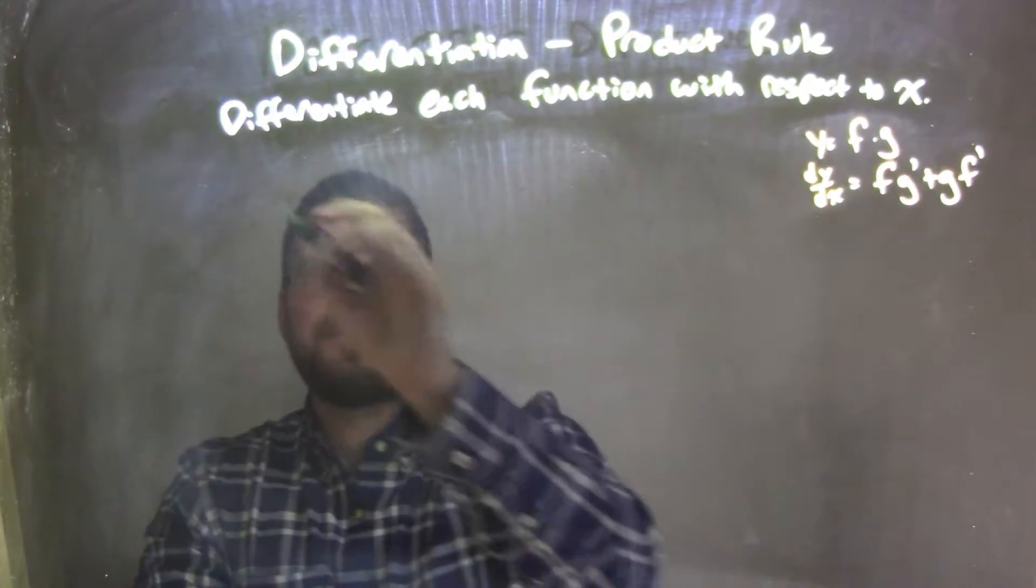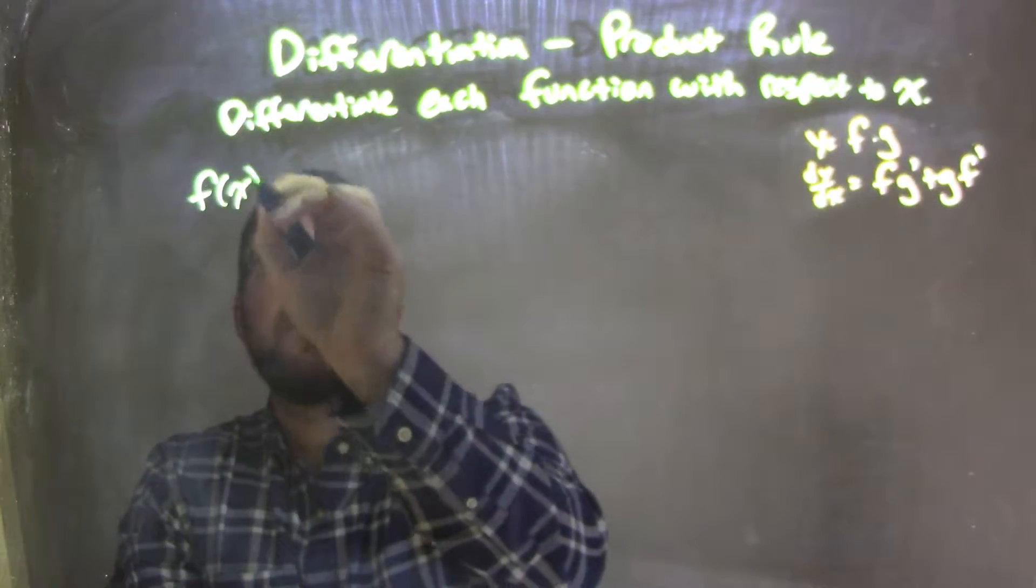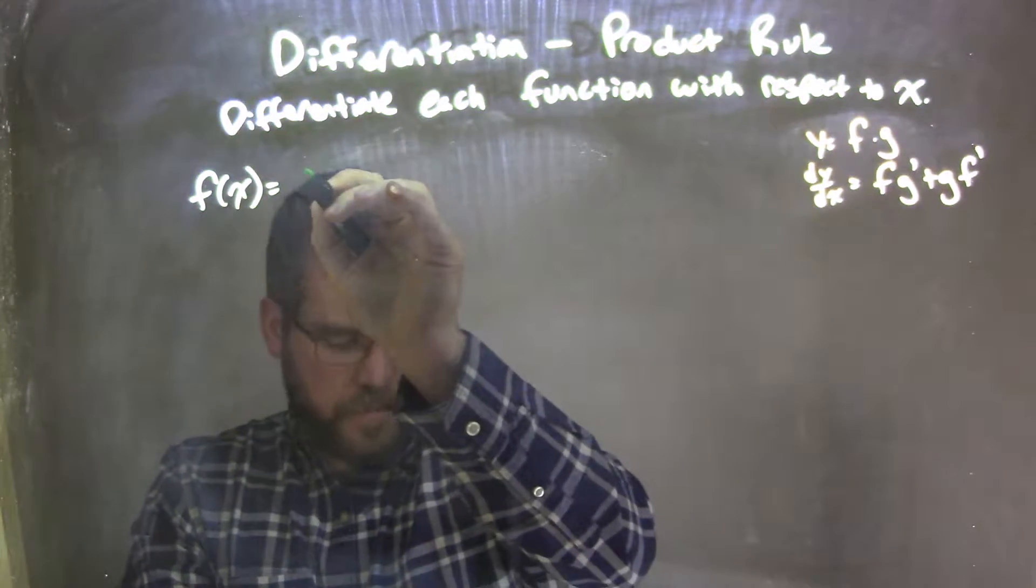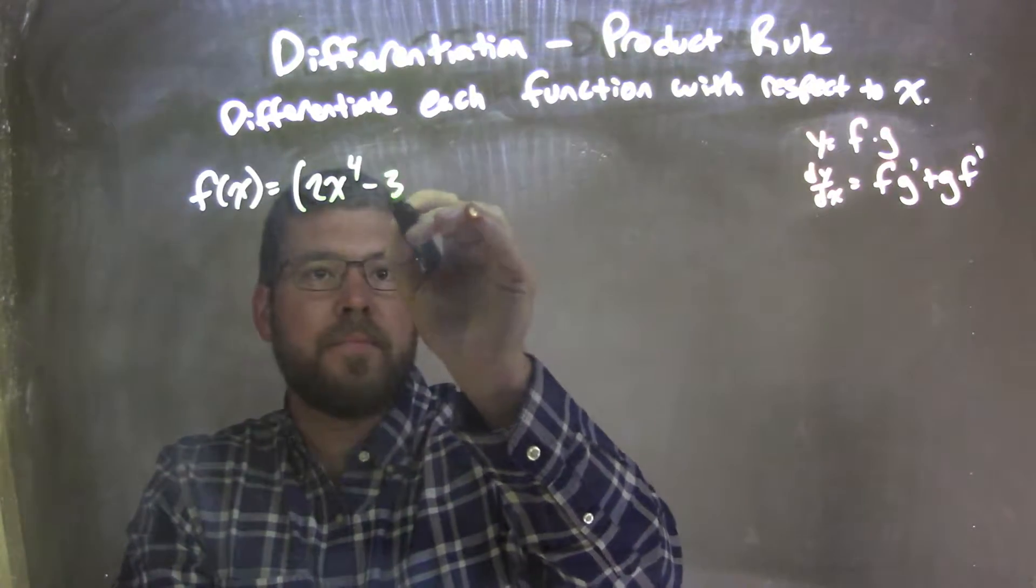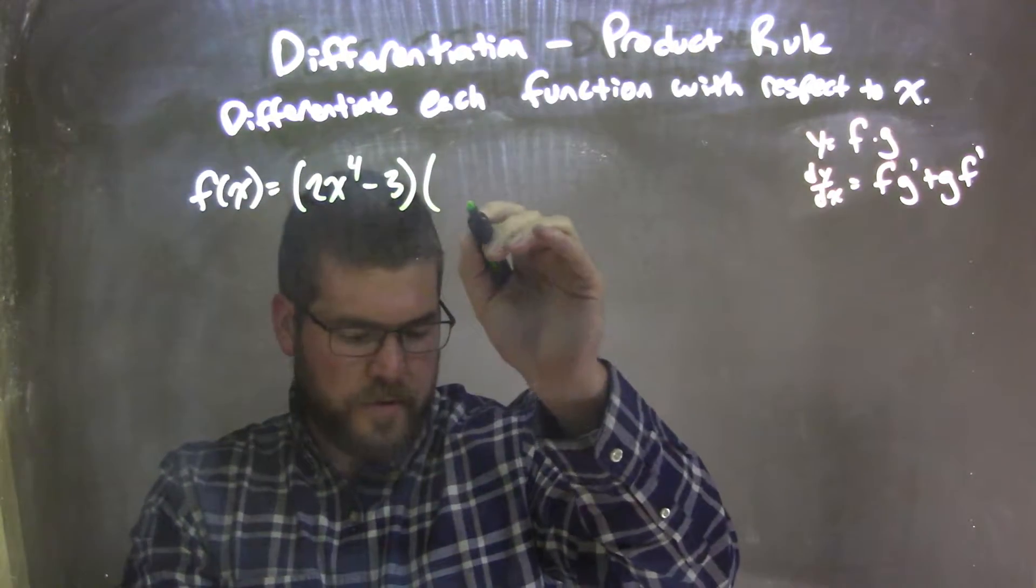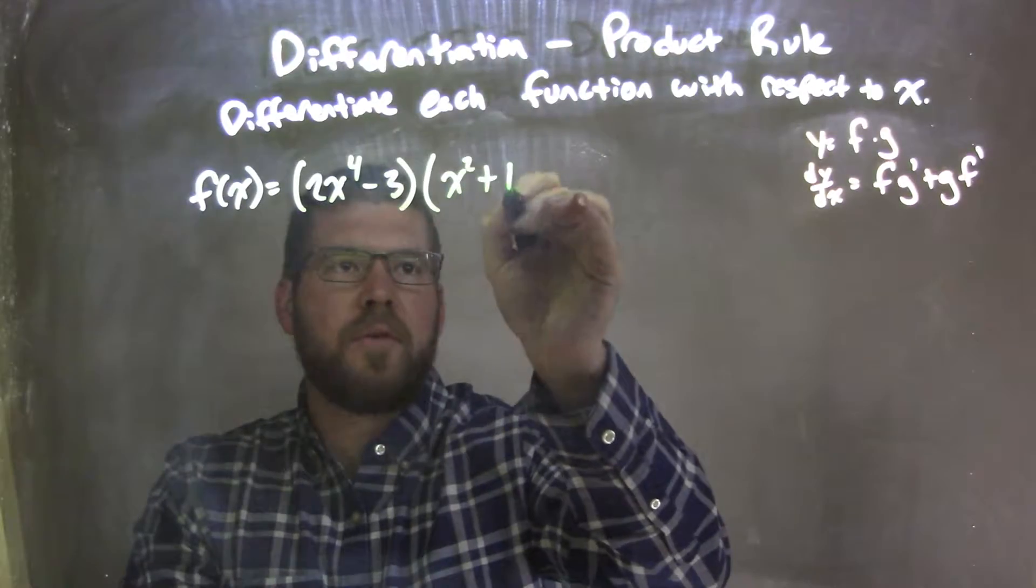So if I was given this function, f of x is equal to, I have 2x to the 4th minus 3, new parenthesis, x squared plus 1.